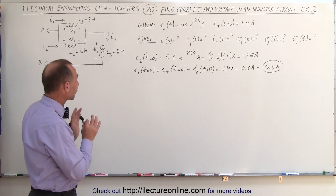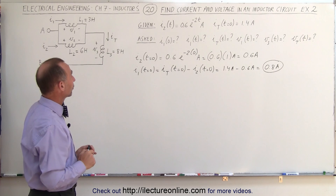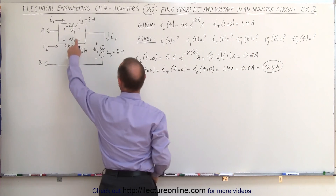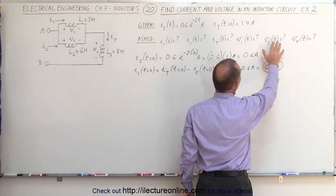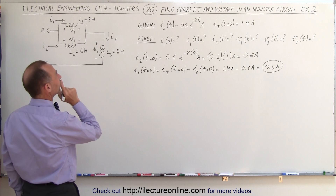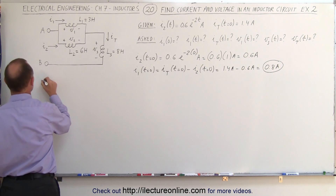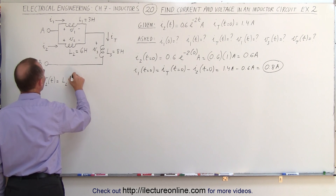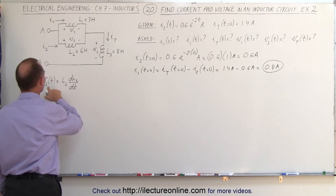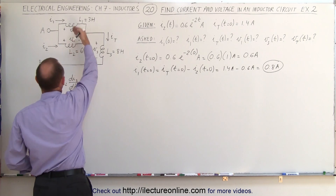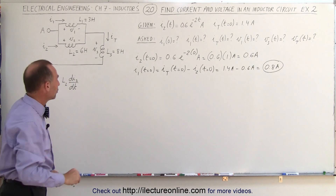Instead of finding the currents directly, it'd be easier to find the voltages first. Let's find the voltage across inductor 1, which is the same as the voltage across inductor 2. From that, we can figure out the voltage across inductor 3 and the total voltage. The voltage across inductor 2 as a function of time is equal to L₂ times the rate of change of the current through that inductor. I'm using inductor 2 because I know the voltages are the same and I'm given the current through inductor 2.